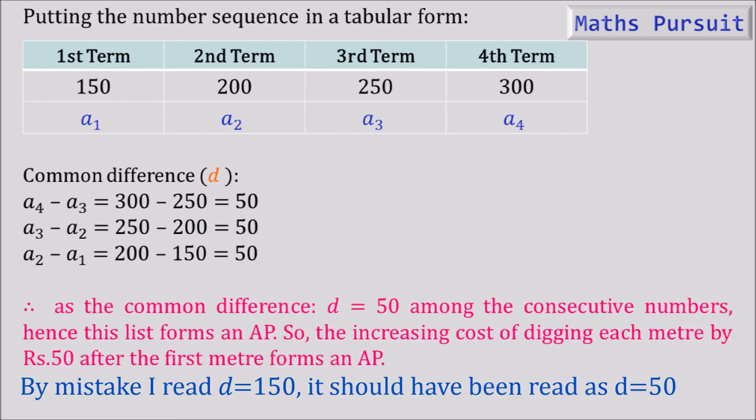Therefore we can say that as the common difference d equals 50 among the consecutive numbers, hence this list forms an arithmetic progression. So the increasing cost of digging each meter by Rs.50 after the first meter forms an arithmetic progression.